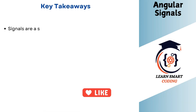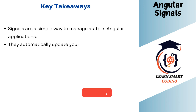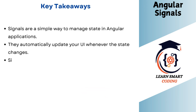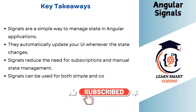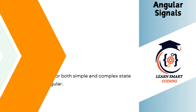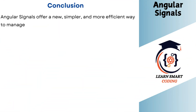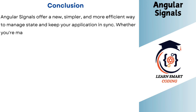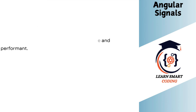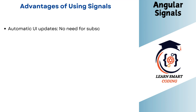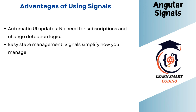These are the takeaways for this video: Signals are a simple way to manage state in Angular applications. They automatically update your UI whenever the state changes. Signals reduce the need for subscriptions and manual state management. Signals can be used for both simple and complex state management in Angular. To conclude, Angular Signals offer a new, simpler, and more efficient way to manage state and keep your application in sync — whether managing simple counters or complex data, signals make your code more maintainable and performant.